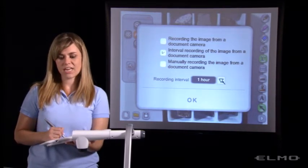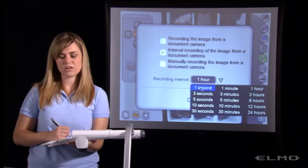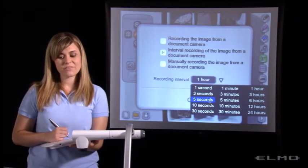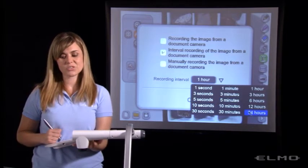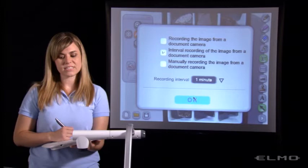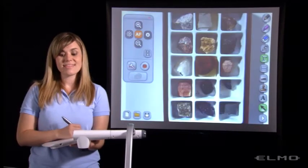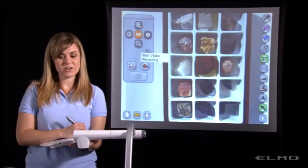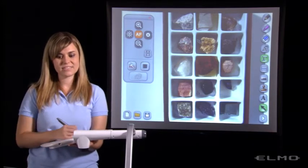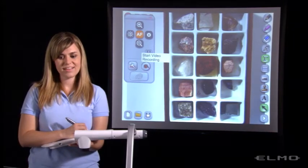Before we do time-lapse we'll come down here and choose our recording interval. We can tell the camera to take a picture every second, every three seconds, every five seconds, every five minutes, up to 24 hours. We'll choose one minute, press OK, and then press start recording here.